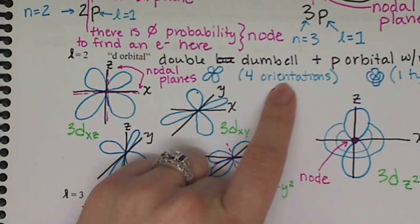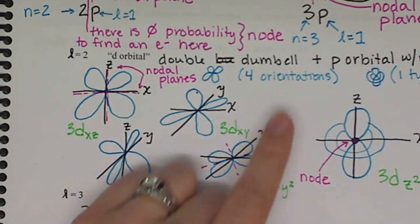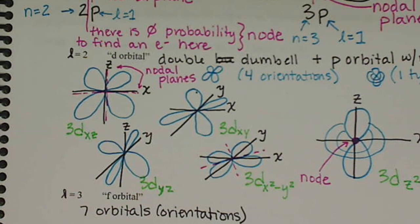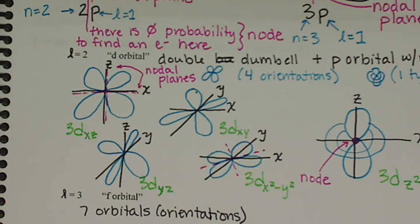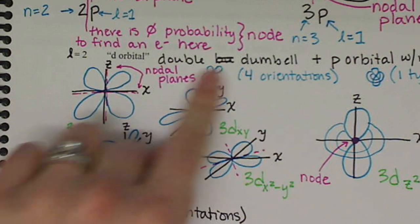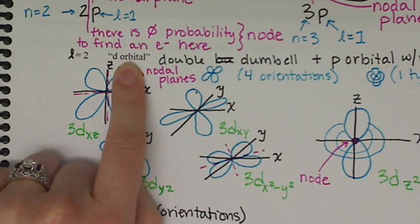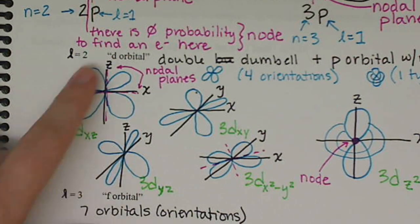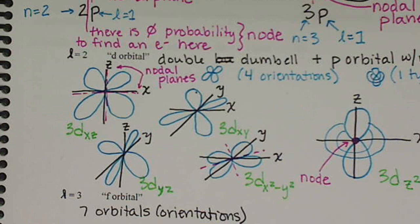This is determined from the next quantum number that we're going to talk about, which is the magnetic quantum number, or m sub l. Remember, we have five different orientations of our d orbital that will come up again in our discussion of the magnetic quantum number.